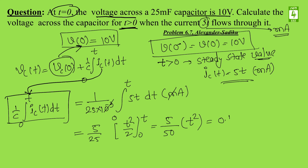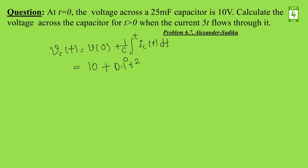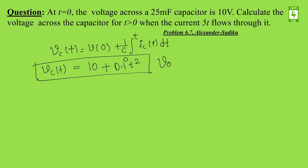This gives 5/50 times t² evaluated from 0 to t, which equals 0.1t². So the final voltage across the capacitor is v_c(t) = 10 + 0.1t² volts. The initial voltage across the capacitor was 10 volts, plus 0.1t² is the steady state contribution. The final answer is 0.1t² + 10 volts — note this is in volts, not millivolts.